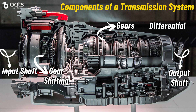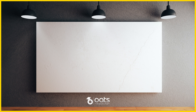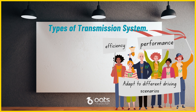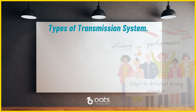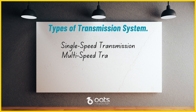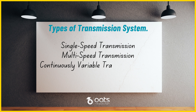Now with a firm foundation in what a transmission system is and how it operates, let's delve deeper into the various types of transmission systems employed in electric vehicles. Electric vehicles, like traditional ones, utilize various transmission systems to optimize performance, efficiency, and adapt to different driving scenarios. These transmission systems play a pivotal role in determining how efficiently the electric motor's power is translated into motion. The three types are: single-speed transmission, multi-speed transmission, and continuously variable transmission, or CVT.